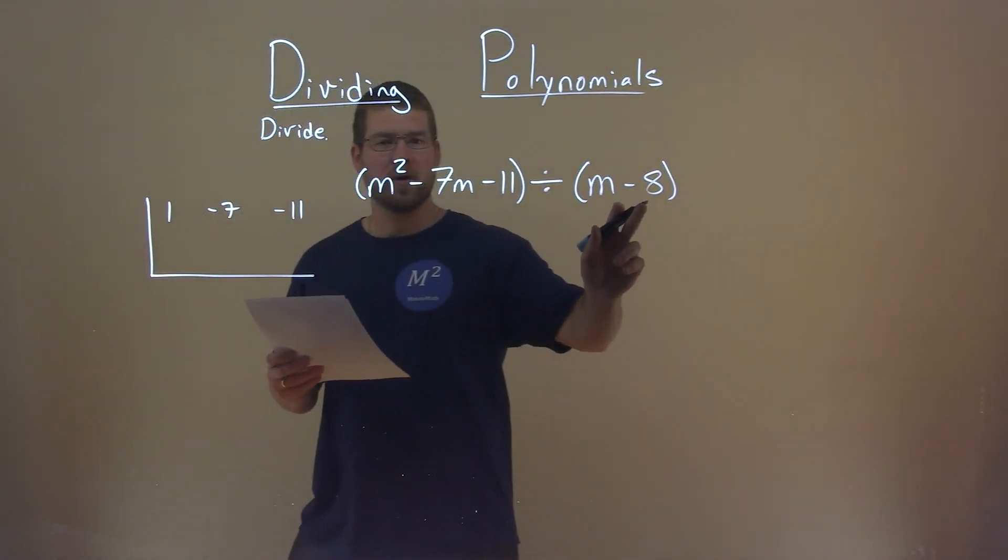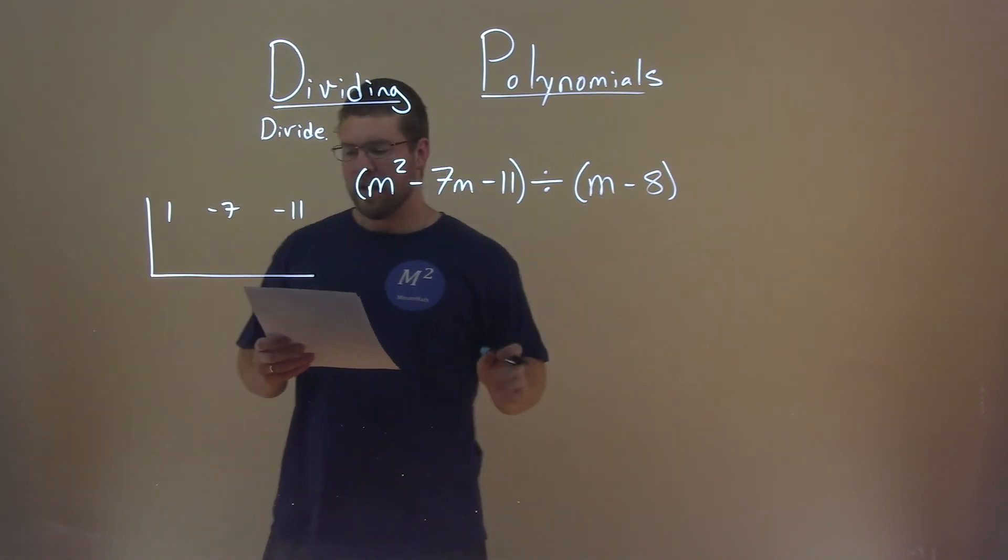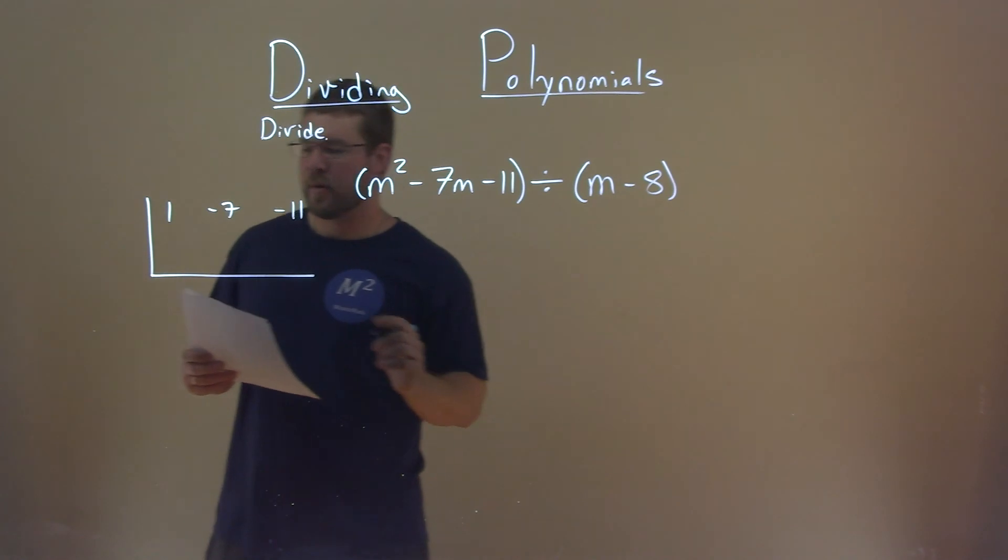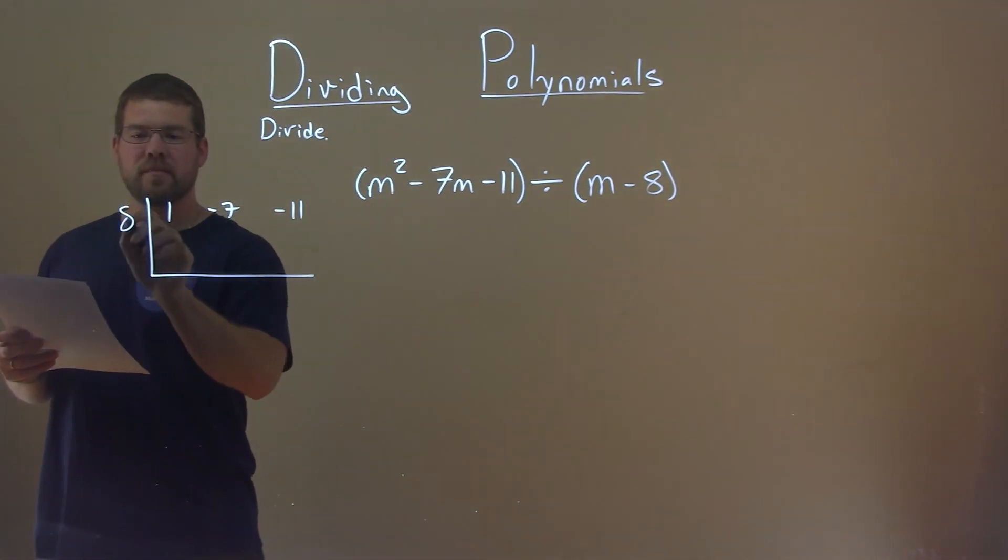Now we're looking at this part right here, and we see a negative 8. So we have m minus an 8, so we're going to put a positive 8, opposite of that, right here.